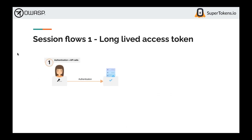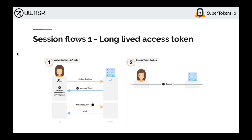Before getting into rotating refresh tokens, let's start with the simplest form: one long-lived access token, as implemented in most open source libraries. The user authenticates, the API returns an access token (JWT or opaque token, also known as session ID or session cookie). Every subsequent request uses the access token. At some point the access token expires, API calls start failing, and the user must re-authenticate. From a security standpoint, if this access token is compromised, the attacker has access to the victim's account for as long as the session is alive.